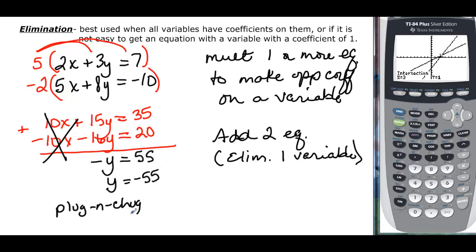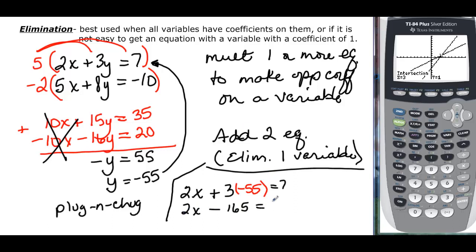This would give you negative y equals 55, so we would know y would be negative 55. Then plug and chug—the numbers are going to be ugly, but we can try it. Go back up to an original equation, and we're going to say that 2x plus 3 times my y, which I found out to be negative 55, is going to equal 7. So 2x minus 165 equals 7. 2x is going to equal 172, and then if I divide by 2, I end up with 86. So by elimination, x would be 86 and y would be negative 55.